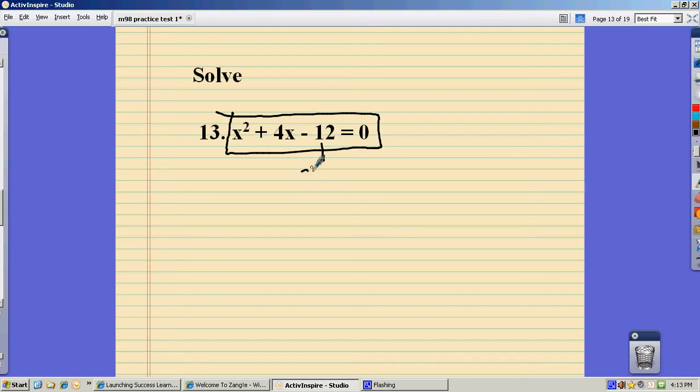So I'll just list some factors of 12 here. Looks like I just got it right there. Negative 2 and 6. I know they're going to be opposite signs because they multiply to a negative. But here's my pair right here. Those multiply to negative 12, add to 4.